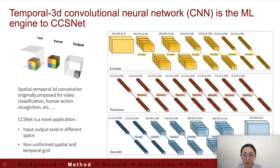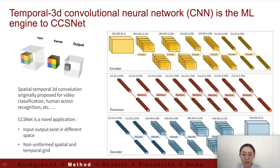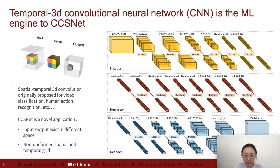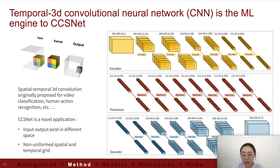The temporal 3D convolutional neural network is the core of CCSNet. The network has three components: encoder, processor, and decoder. The encoder takes the input and convolves it to extract higher-order input embeddings. The processor maps the input's embedding to the output's embedding. The decoder maps the output's embedding to the physical space of the output. We designed this network based on the concept of 3D convolution, originally proposed in video classification and human action recognition models. Notably, our spatial and temporal grids are both non-uniform, making the model significantly more applicable to larger domains and longer timeframes.